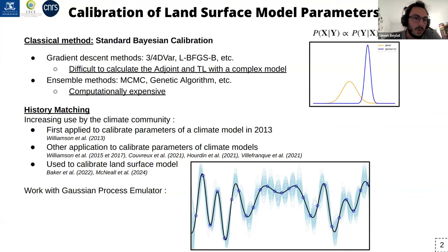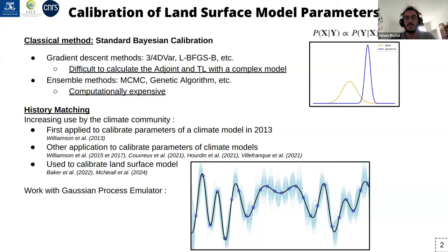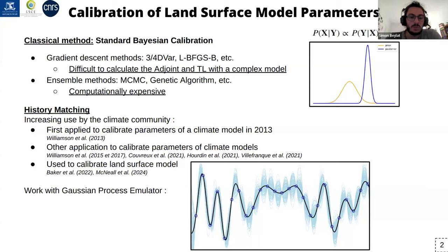So we wanted to explore the potential of history matching, as it was used to calibrate parameters of climate models which are larger and more expensive to run, and it works by using a Gaussian process to emulate the model.